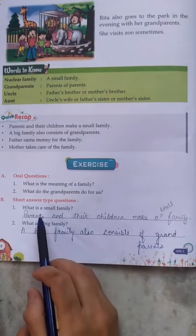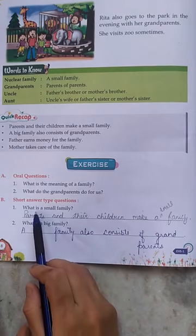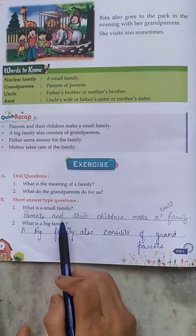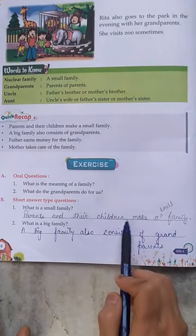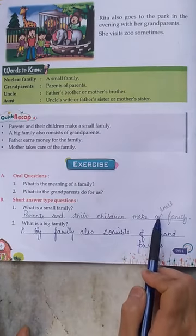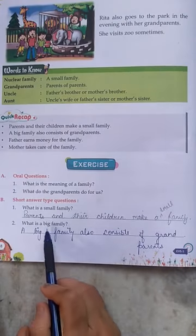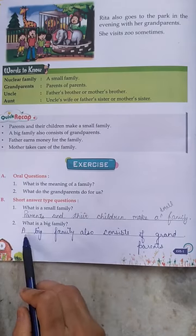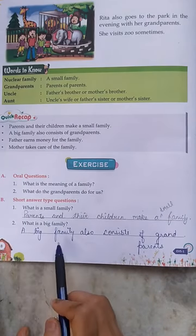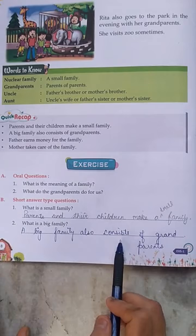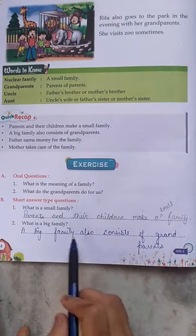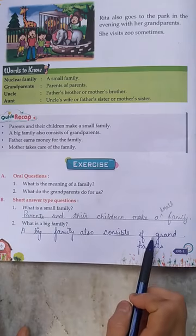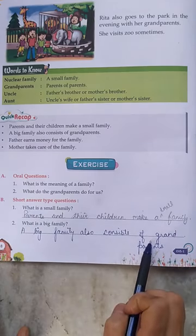Now again, revise these questions. What is a small family? — Parents and their children make a small family. What is a big family? — A big family also consists of grandparents. Big family mein kaun hote hain? Aapke grand parents bhi aapke saath hote hain.